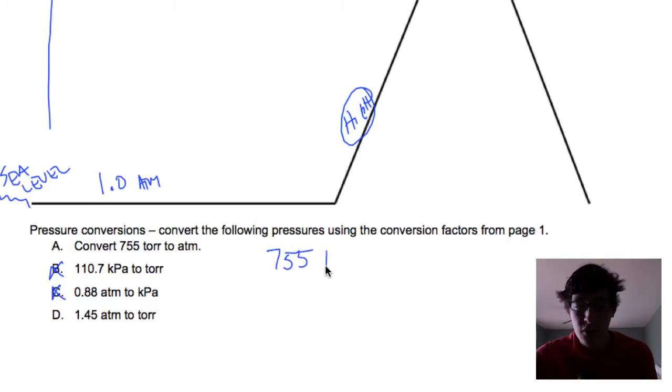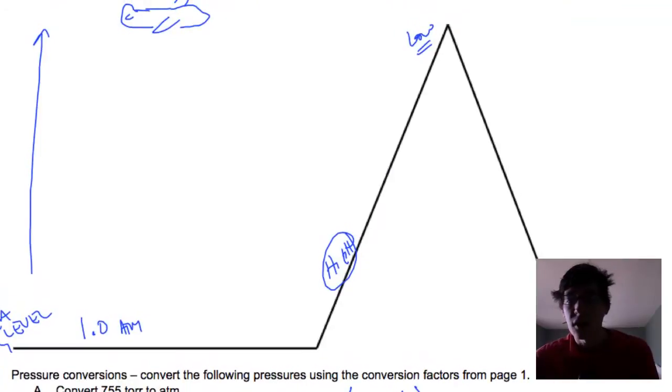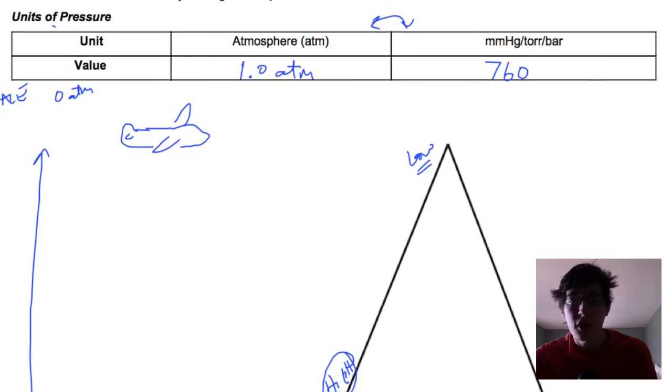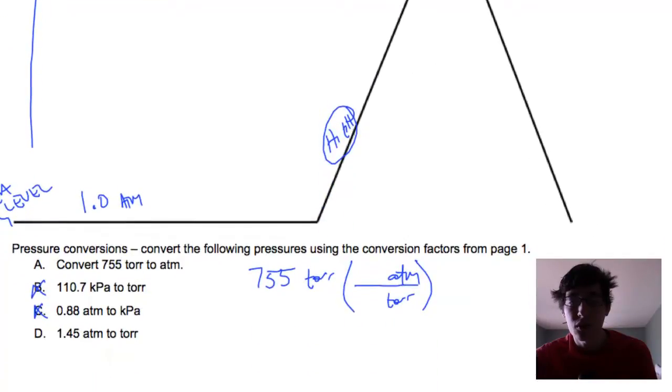If we do 755 torr, and I set up a conversion, we are going to do torr on the bottom because I want those to cancel. We're going to change to atmospheres. Our conversion factor was up here in the chart. So one atmosphere is 760 torr. Let me scroll back down. So one atmosphere to 760. When you divide that, you get 0.99 atmospheres. That makes sense. 755 is close to 760.